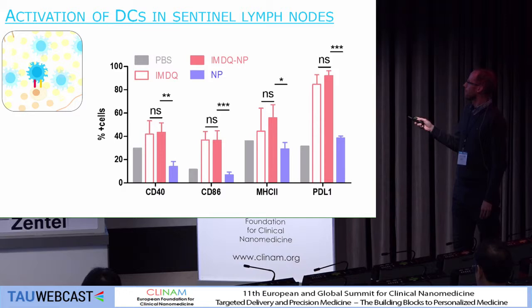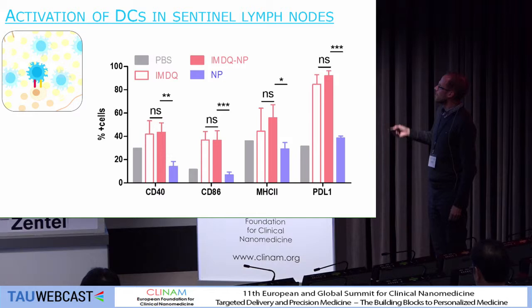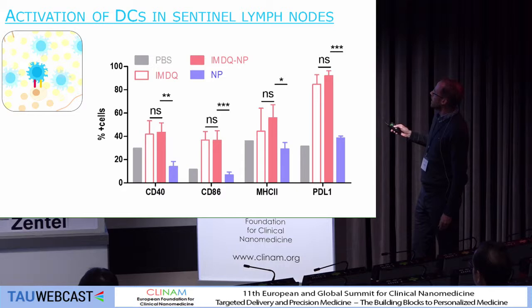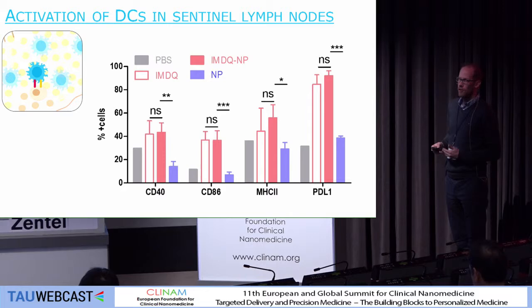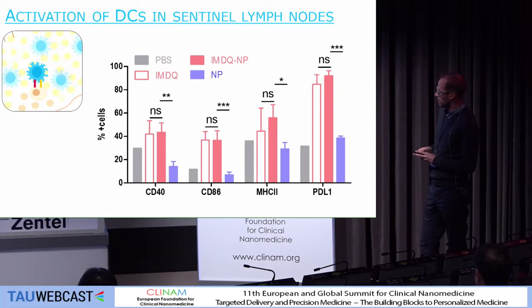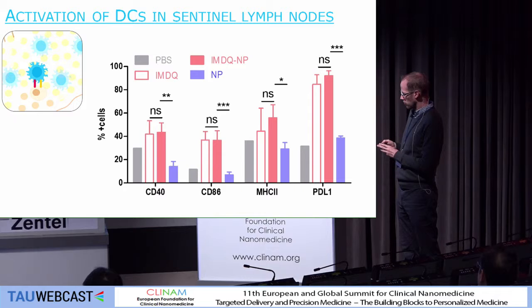Are we also activating dendritic cells in lymph nodes? Here we performed an experiment where we grew a tumor, injected our different formulations into the tumor, and then looked at maturation markers in the draining lymph nodes. This shows that the TLR agonist in soluble form and in nanoparticle-conjugated form is equally potent in activating dendritic cells in the draining lymph nodes. So you are abrogating the systemic inflammatory effect of these agonists, but you are still retaining the immune-activating potential in the draining lymph nodes — actually the place where you want to be.